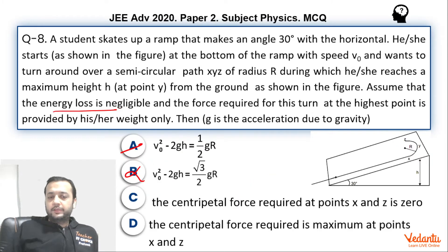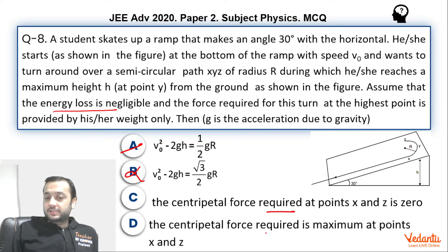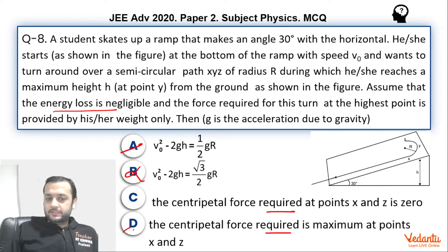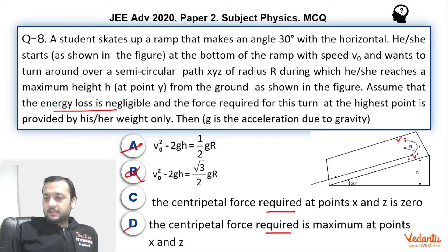Now if you read options C and D: the centripetal force required at points X and Z is zero, or the centripetal force required at points X and Z is maximum. IIT gave option D as correct using the logic that the speed at X and Z — call it V' — is the same and is maximum on that circle. Since V²/R is maximum, centripetal force is maximum.